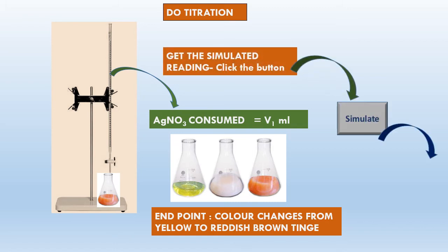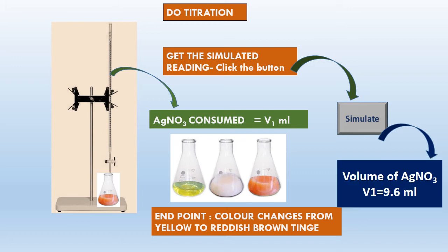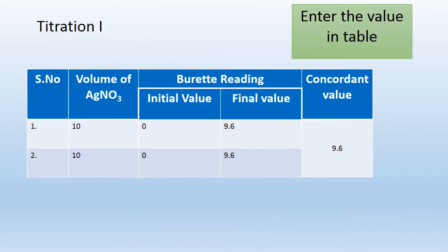Now let us note down the AgNO₃ consumed as V1 ml, and get the simulated reading by clicking the simulate button. Students, get ready to note down the values. Volume of AgNO₃, V1 is 9.6 ml — this is common to all students because we have given the same AgNO₃ to all students. Let us enter the value for Titration 1 in the tabular column. For concordancy, we enter the value 2 times.